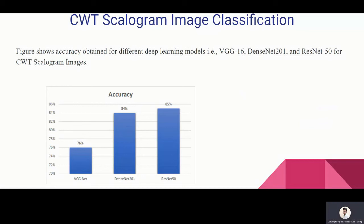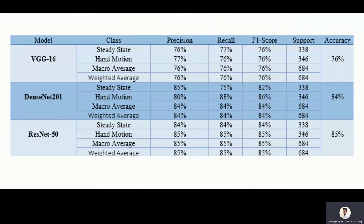Now, these are pre-trained models, pre-trained deep learning models. These are the different metrics which I used: precision, recall, F1 scores, and support.